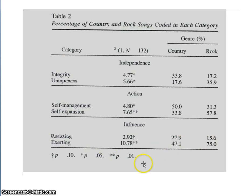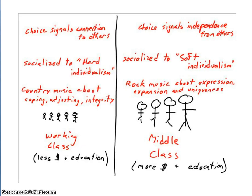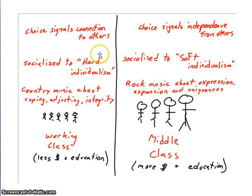Researchers find evidence of these different worldviews in these two genres of music. More highly educated — middle class — people are more likely to listen to rock, while less educated people are more likely to listen to country. To wrap up: for the working class, choice signals connection to others; they are socialized to hard individualism — it's going to be a tough world and you've got to keep your values and integrity intact, resist tough challenges. Country music reflects this: coping, adjusting, integrity.